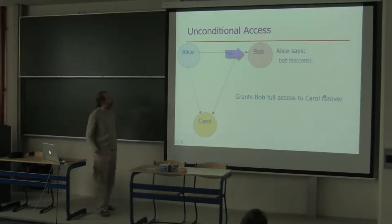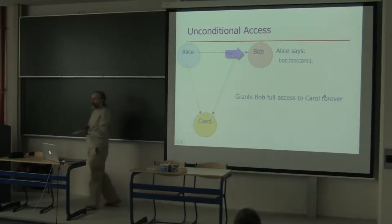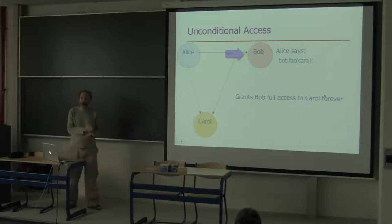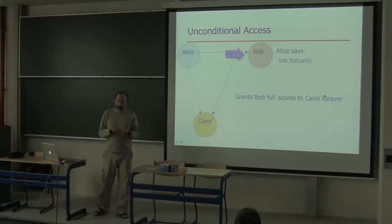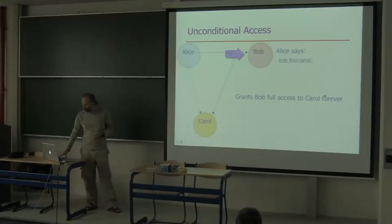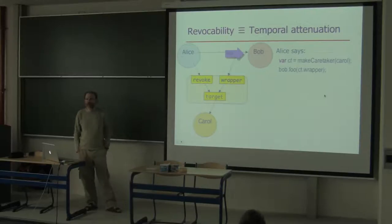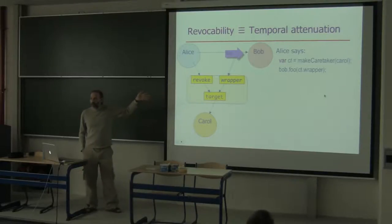Why is this useful? Recall our connectivity by introduction: when Alice sends a message to Bob, she's giving Bob full, unconditional access to Carol forever. Sometimes that's more authority than Alice wishes Bob to have or Bob needs. In that case, Alice expresses the restriction by interposing an attenuator. The caretaker is a particular kind of attenuator — it attenuates authority in the temporal dimension.